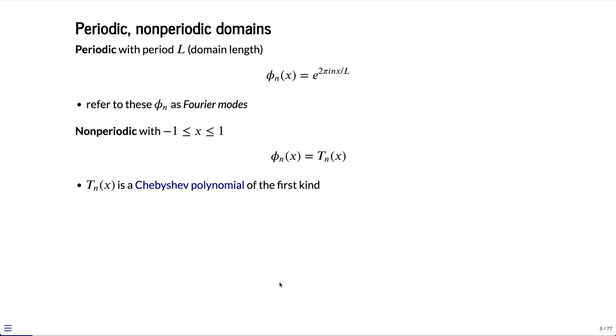For periodic domains, we have domain length L, and the basis functions will have period L. We denote our basis functions phi n here as e to the 2 pi i n x over L, and we'll refer to these as Fourier modes. Through Euler's identity, this e to the 2 pi i n x over L is a combination of sines and cosines, and we'll describe those in some more detail as we go along.